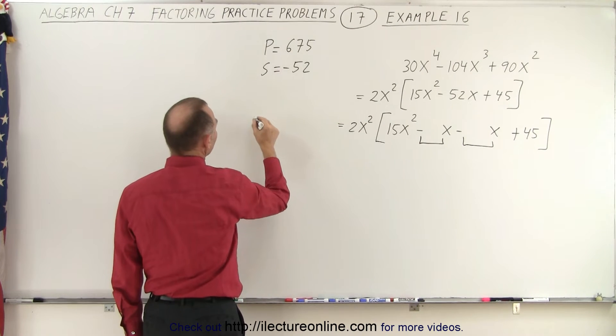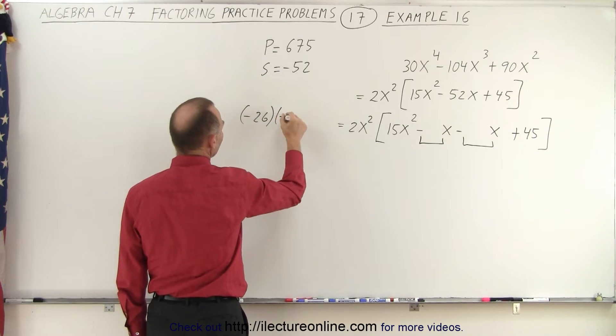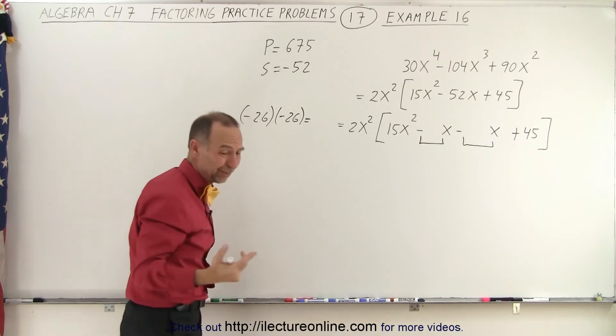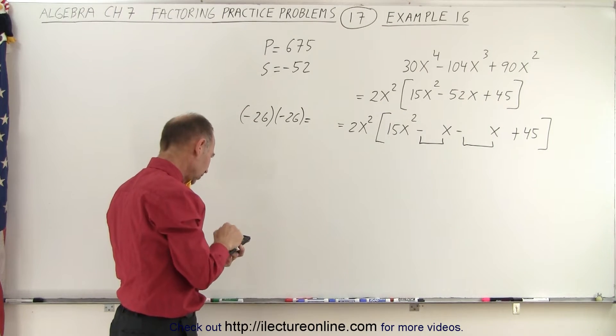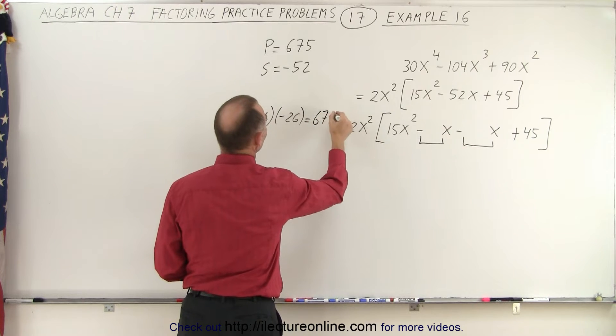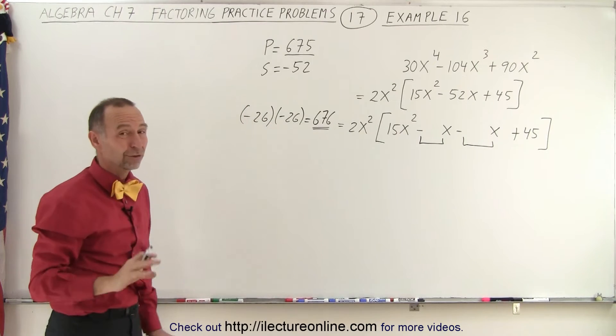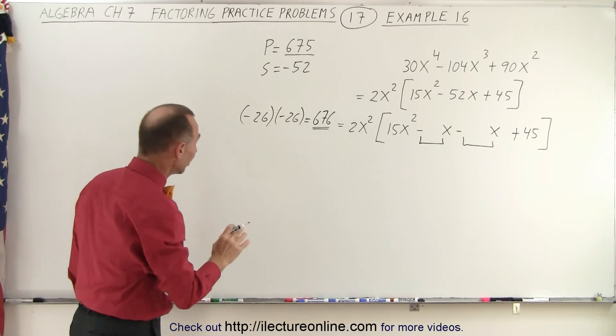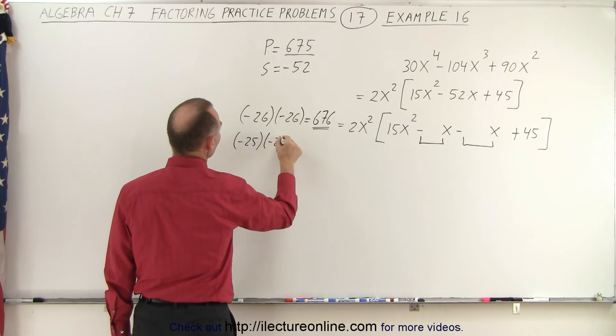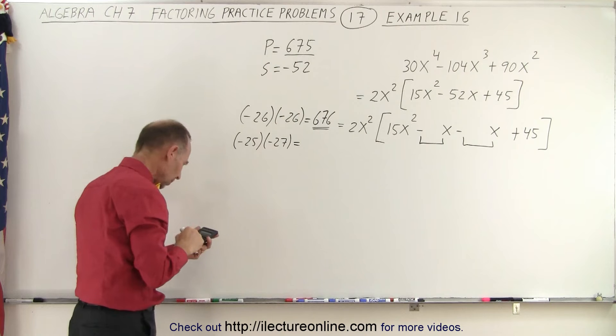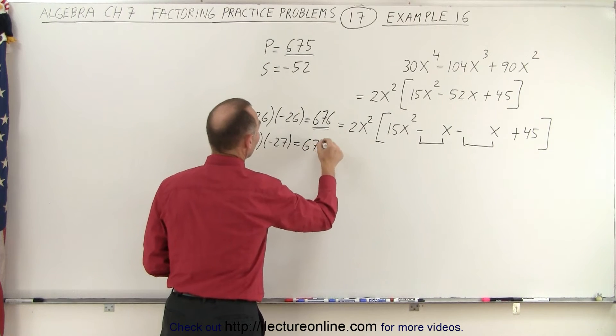If we divide it half and half, we get minus 26. Multiply it times minus 26. What is that equal to? Well, sometimes you need a calculator to figure that out. So you take 26, you square that, you get 676. So we got really close to the product we're looking for. So we know that the numbers differ by just a little bit. So maybe we'll try minus 25 and minus 27. Let's see what that multiplies to. 25 times 27, 675. So there we go.